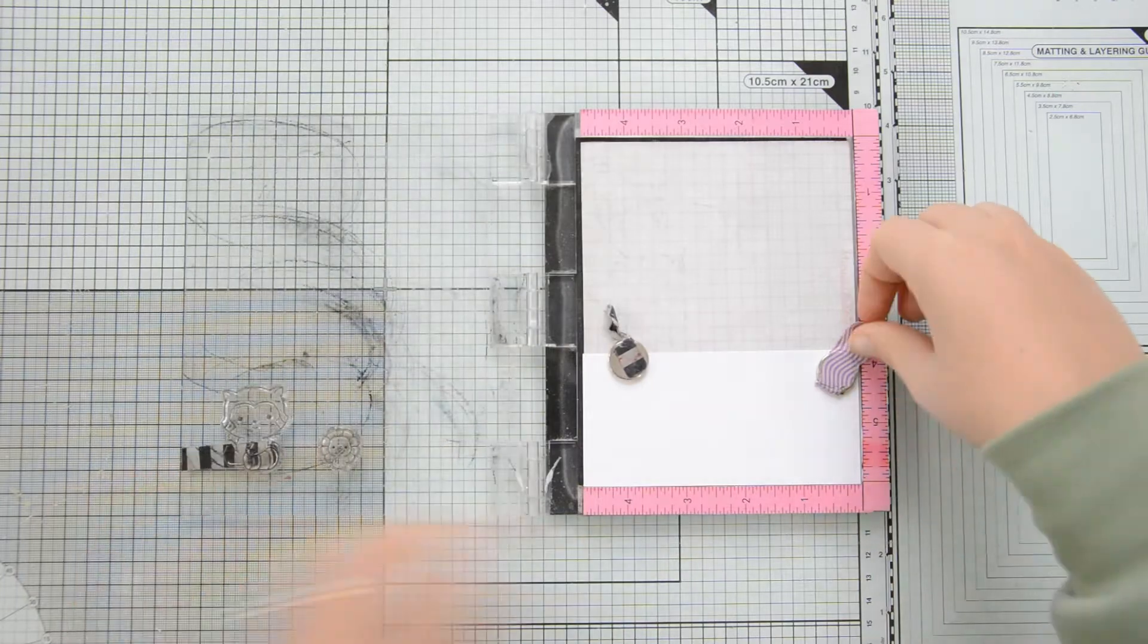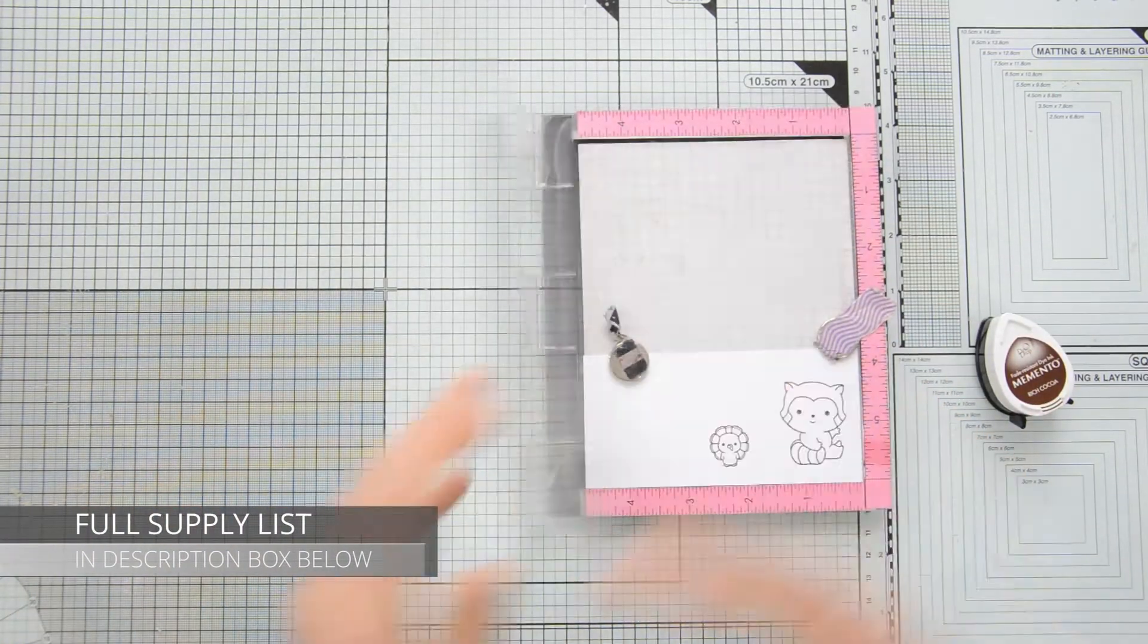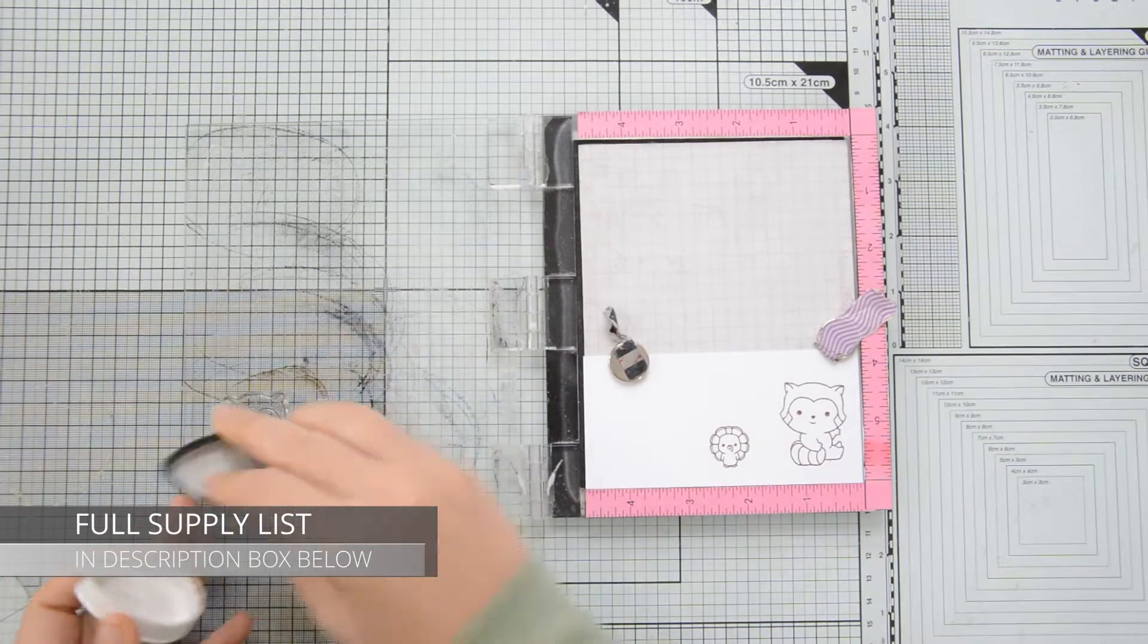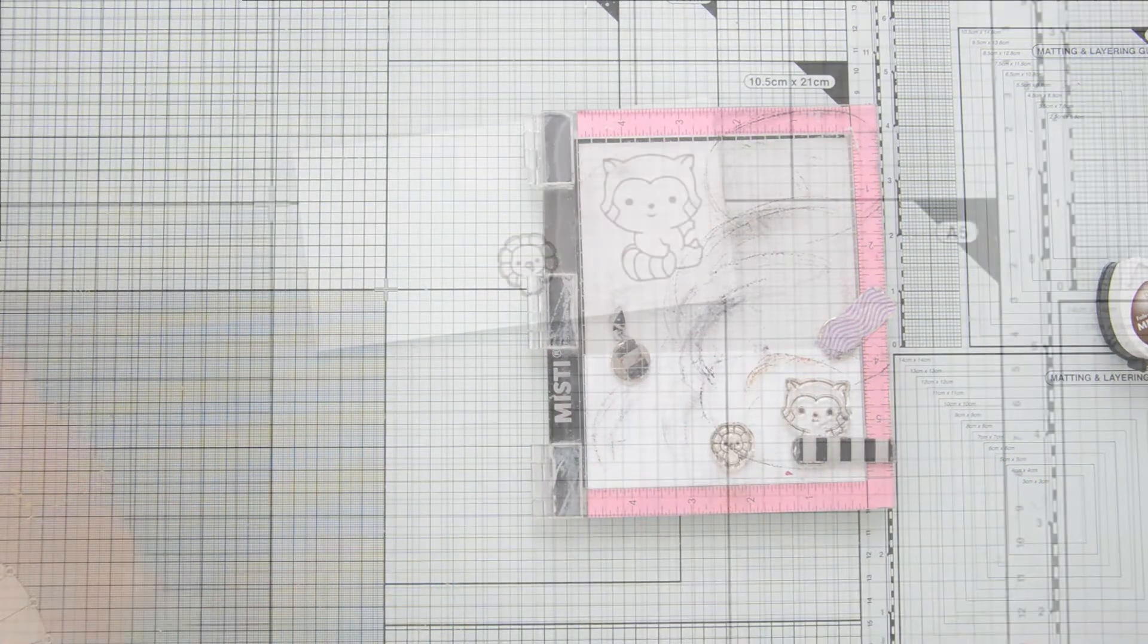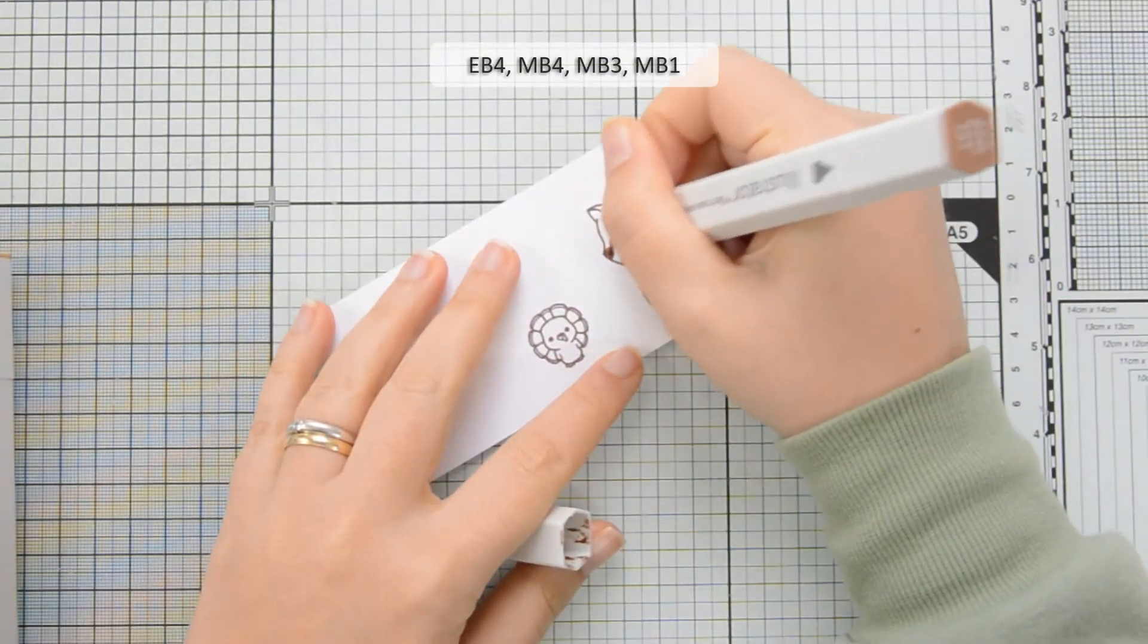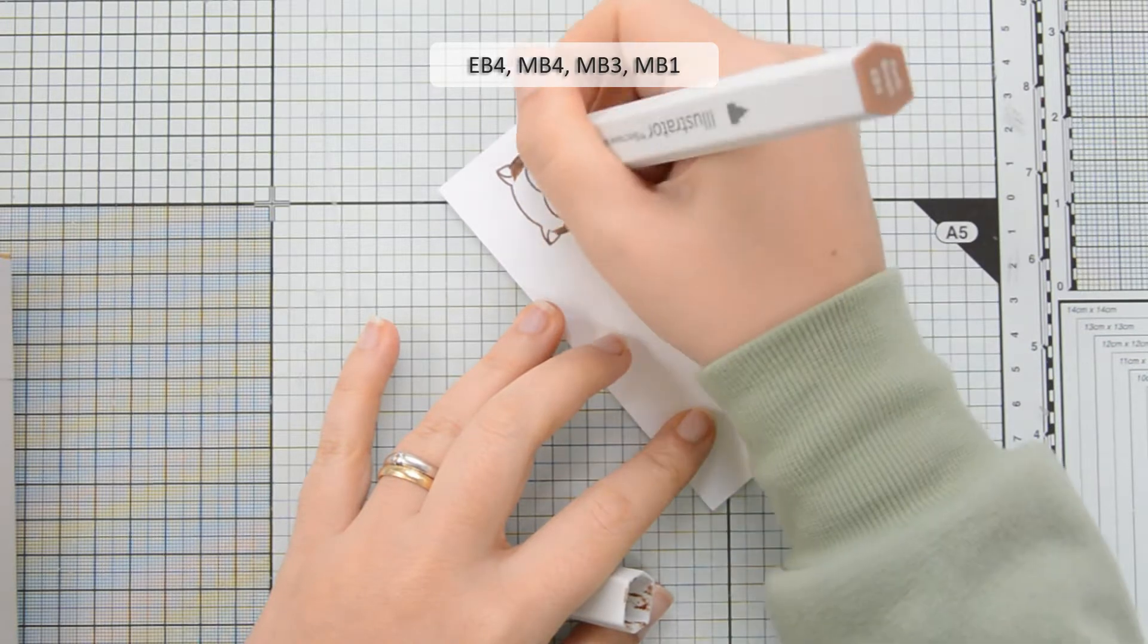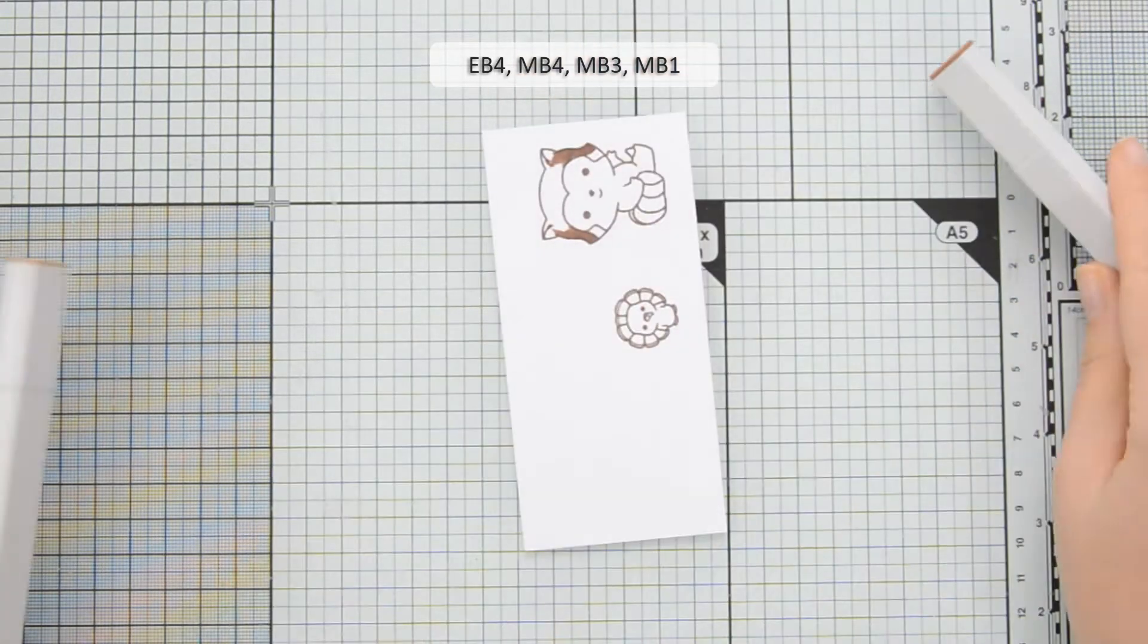I then moved on to my images and these are from the Indian Summer Stamp Set by Sugar Pea Designs. It's a very cute stamp set full of adorable images which are great for your fall themed cards but not only actually, you can see for example this raccoon here would be great for any type of card really.